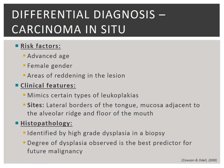Carcinoma in situ is generally described as precancerous neoplastic changes of cells. Risk factors for carcinoma in situ that may be relevant to a patient include advanced age, female gender, and areas of reddening in the lesion. Clinical presentations of carcinoma in situ typically mimic certain types of leukoplakias — that is, a painless white patch. Commonly affected areas are the lateral borders of the tongue, mucosa adjacent to the alveolar ridge, and floor of the mouth. Histopathologically, carcinoma in situ is recognisable by the presence of high-grade dysplasia in a biopsy. The best predictor of whether carcinoma in situ is likely to evolve into squamous cell carcinoma is the degree of dysplasia seen histologically.